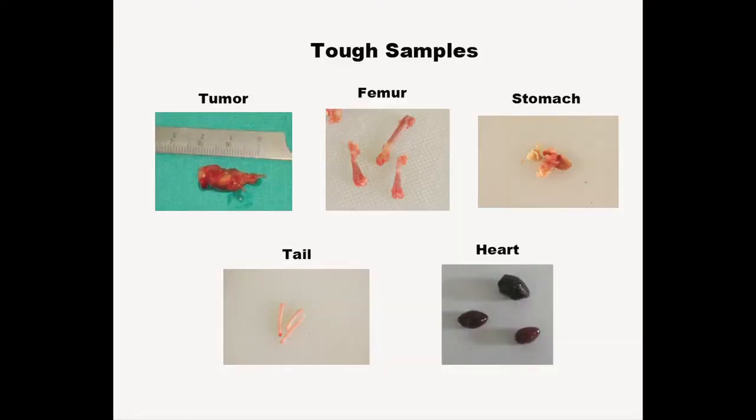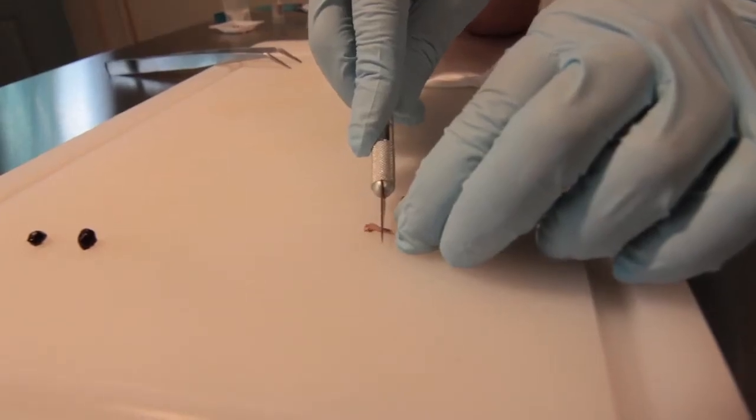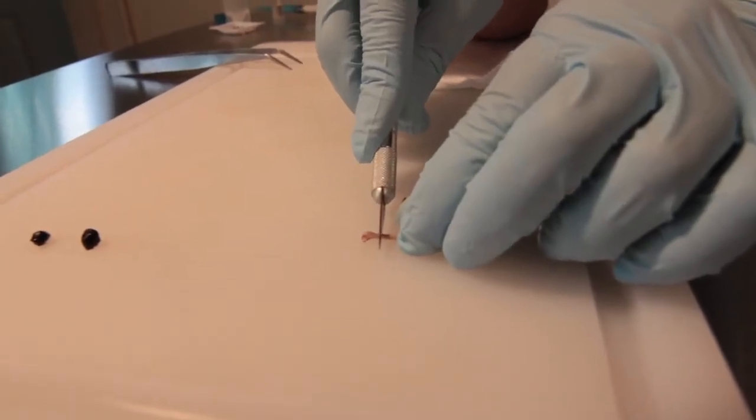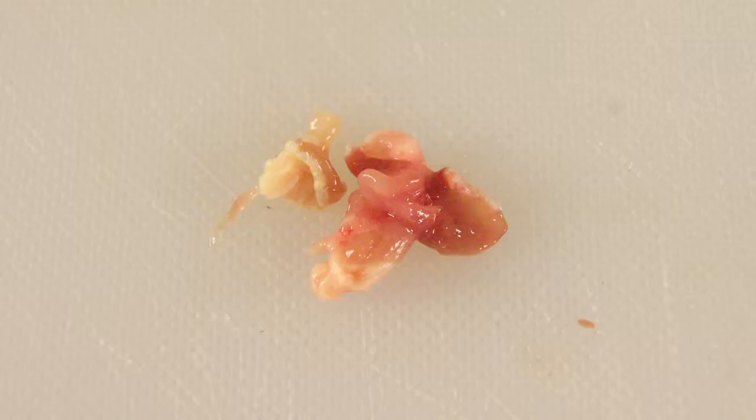Tough samples may be hard or rubbery. They're difficult, or in the case of mouse femur, impossible to cut with a knife, blade, or scissors. Examples of tough tissue include tumor, stomach, skin, or tail snip.